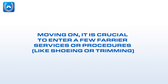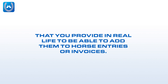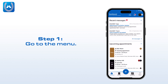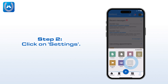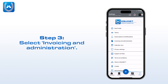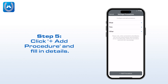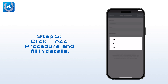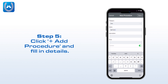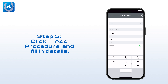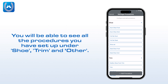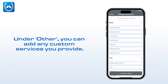Moving on, it is crucial to enter a few farrier services or procedures, like shoeing or trimming, that you provide in real life, to be able to add them to horse entries or invoices. To set up your farrier services or procedures, follow these steps. Step 1: Go to the menu. Step 2: Click on Settings. Step 3: Select Invoicing and Administration. Click Configure Procedures, then click plus Add Procedure and fill in the details.